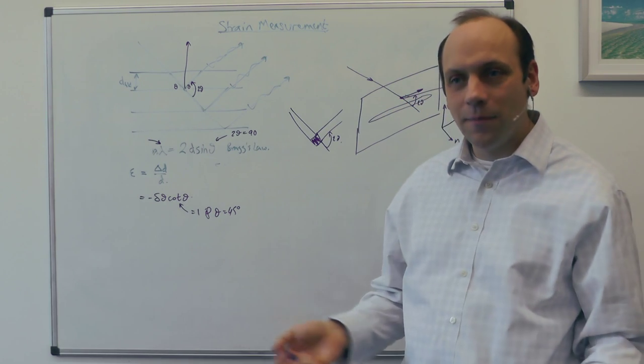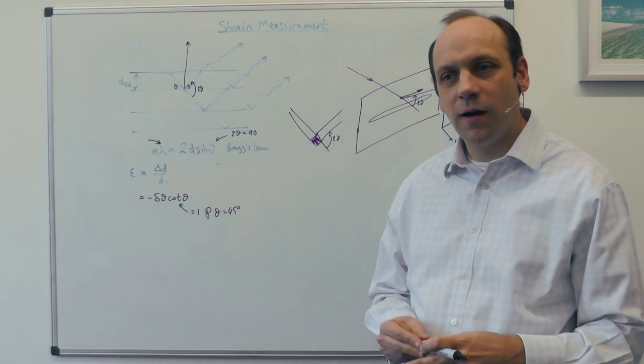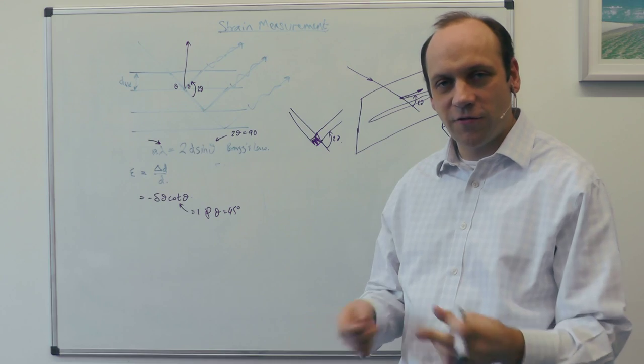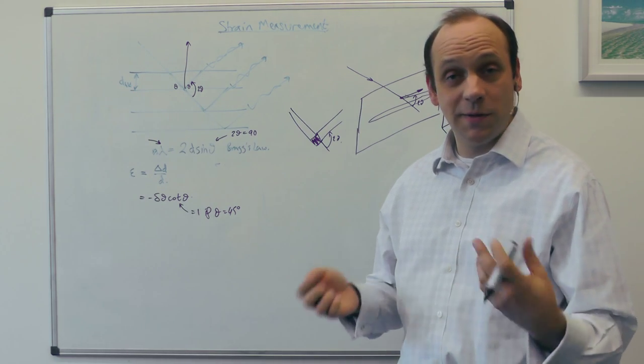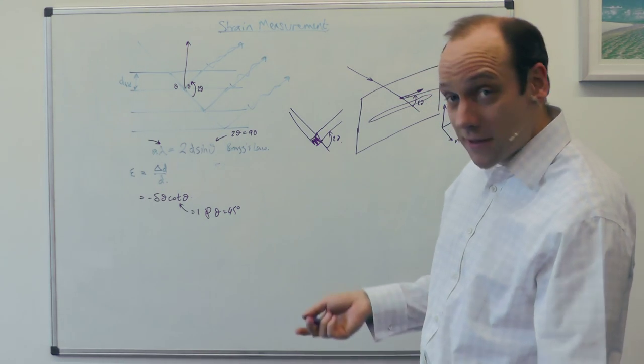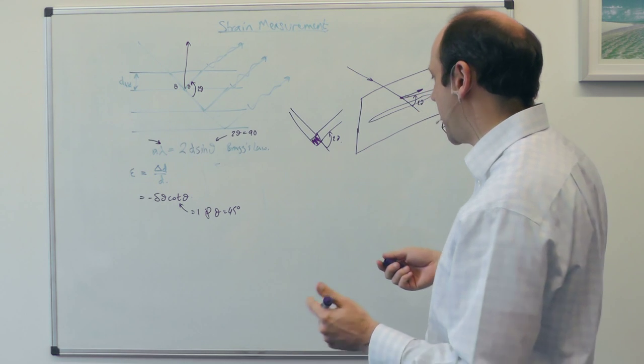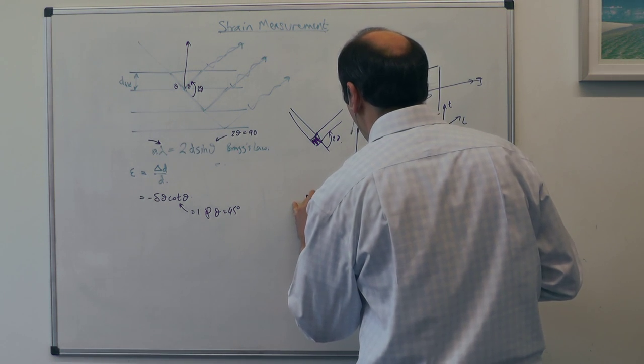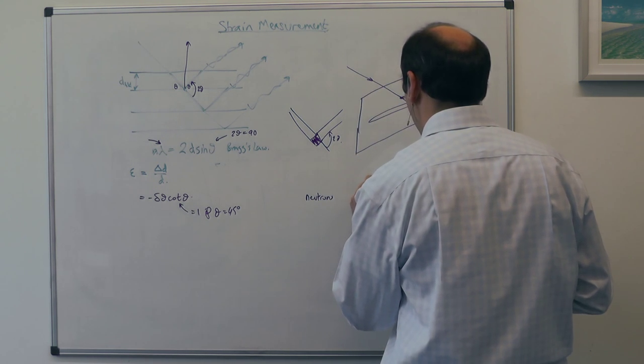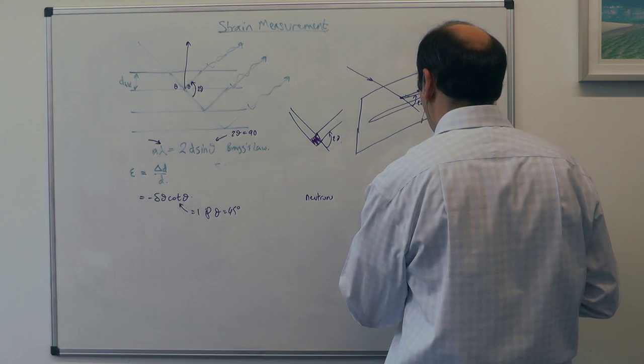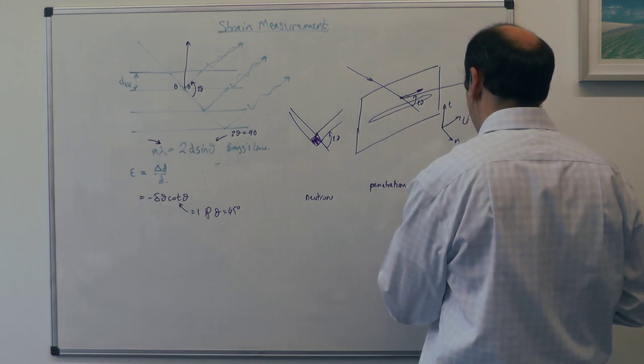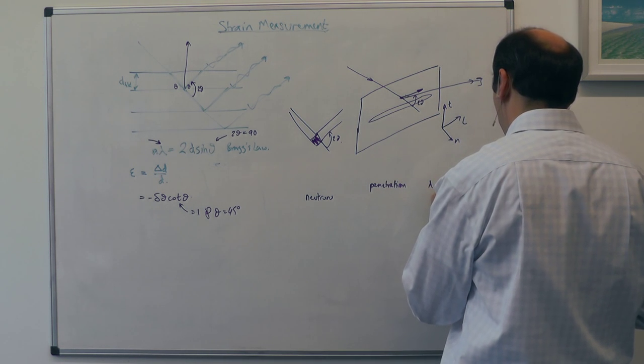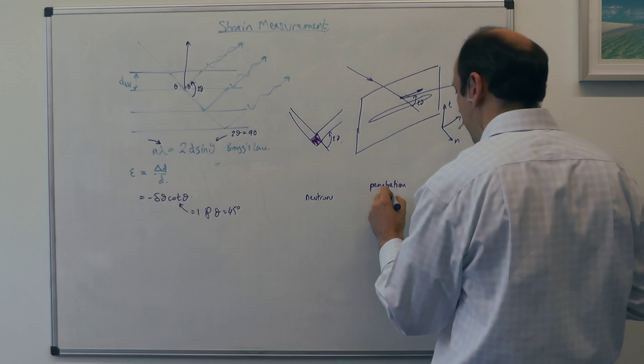And that ends up meaning that you want a probe that doesn't interact very strongly with materials, which means you want neutrons. X-rays are nice. There are problems with X-rays. So, neutrons, you can have penetration. And you can have λ such that θ is 45. You can have both of those.